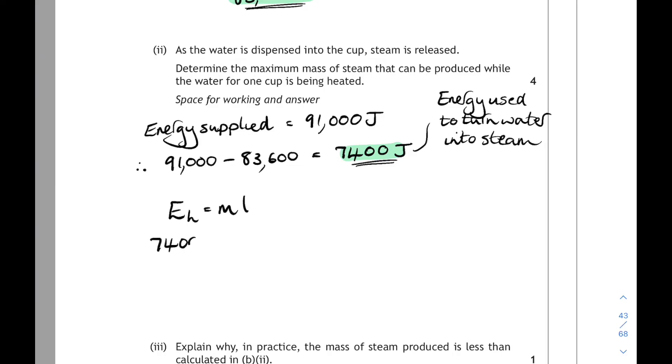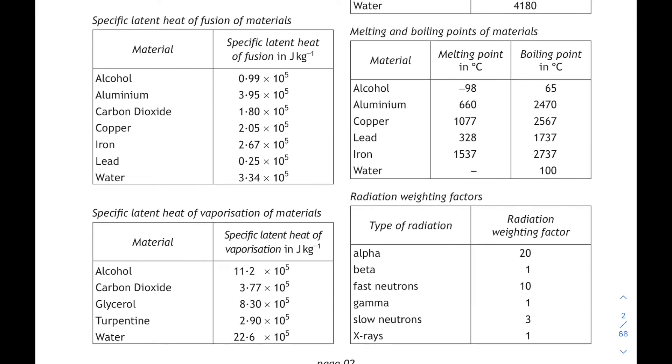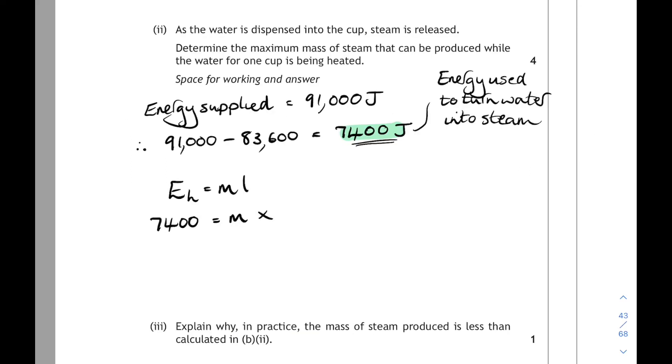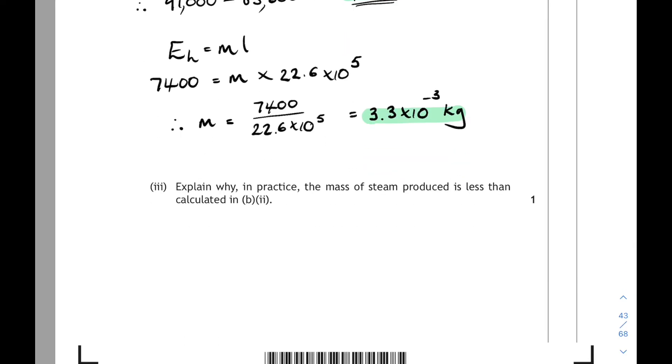So the heat energy was 7,400. That's going to equal the mass times the specific latent heat of vaporization of water, which you'll find right at the bottom of your datasheet. There it is, 22.6 times 10 to the 5. And we substitute that into the relationship for L. And then rearrange it to find M. 7,400 over 22.6 times 10 to the 5 gives us 3.3 times 10 to the minus 3 kilograms. That's 3.3 grams of water. And then explain why in practice the mass of steam produced is less than that calculated in B part 2. And the textbook answer here is that some heat energy is lost to the surroundings. One mark.